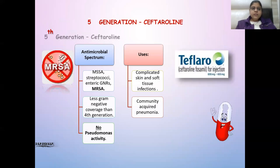Fifth generation cephalosporins — Ceftaroline — are effective against Streptococcus and MRSA, with less gram-negative coverage than fourth generation and no pseudomonal activity. These can be used in complicated skin and soft tissue infections and community-acquired pneumonia.